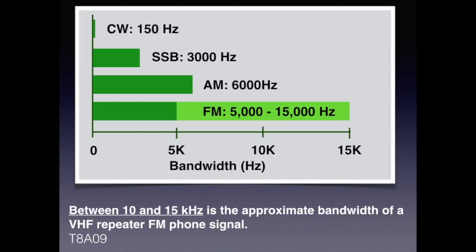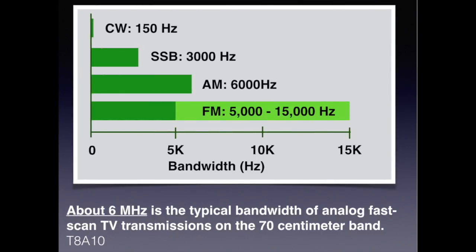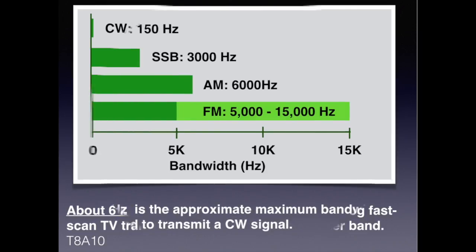For the exam, you need to know that 3 kilohertz is the approximate bandwidth of a single sideband voice signal. Between 10 and 15 kilohertz is the approximate bandwidth of a VHF repeater FM phone signal. About 6 megahertz is the typical bandwidth for analog fast-scan TV transmissions on the 70 centimeter band. And 150 hertz is the approximate maximum bandwidth required to transmit a CW signal or Morse code.